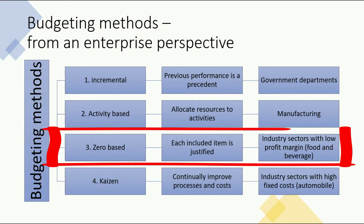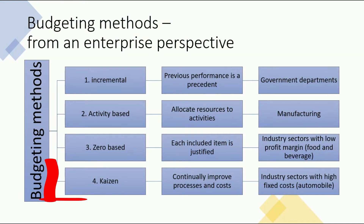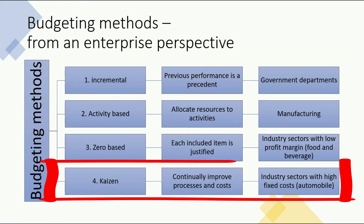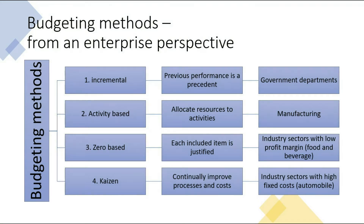Zero-based budgeting is where each item is included and justified. It's useful for industry sectors with low profit margins, such as food and beverage. Kaizen method of budgeting is about continually improving processes and costs. It's useful for industry sectors with high fixed costs, such as the automobile industry.